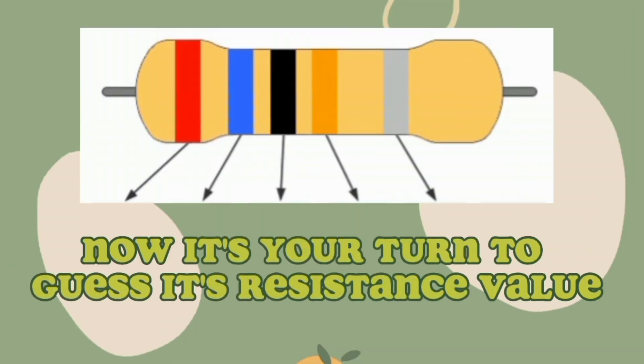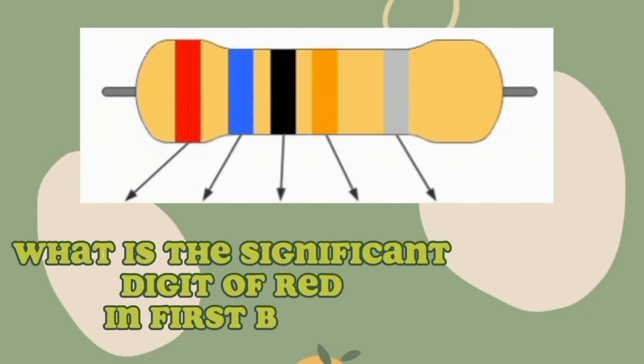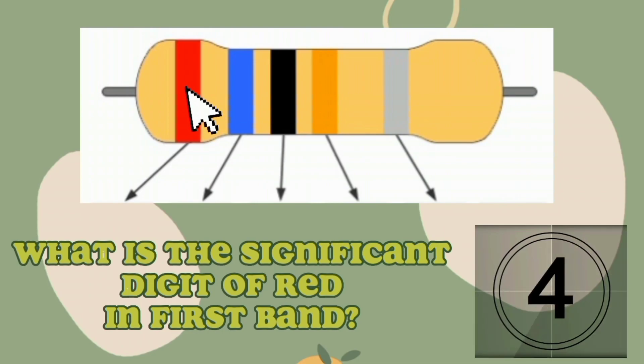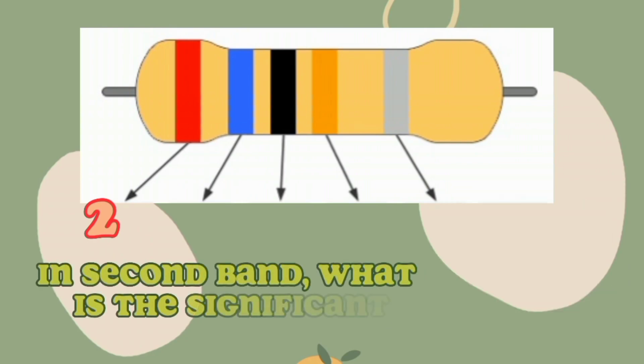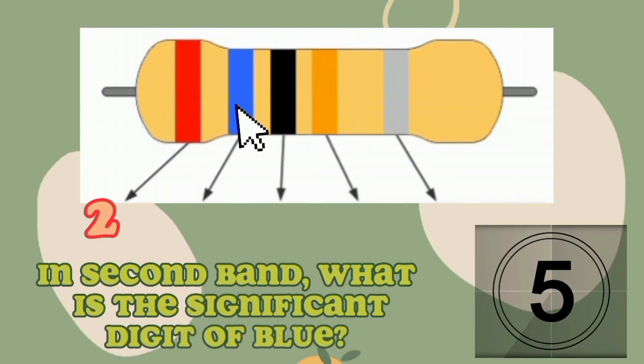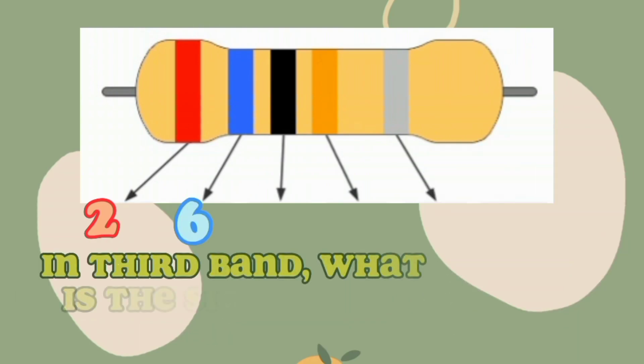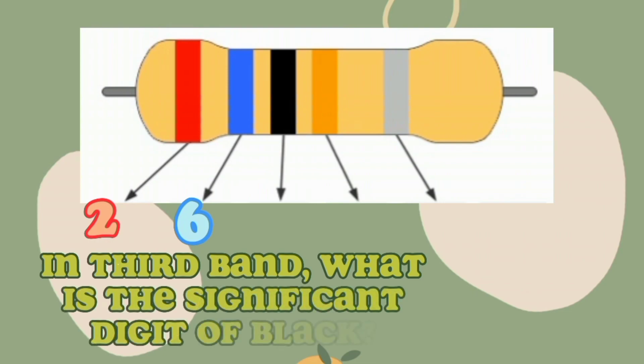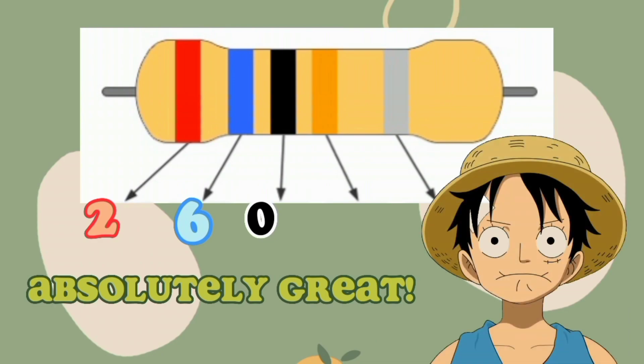Now let's have a test. Now it's your turn to guess its resistance value. What is the significant digit of red in the first band? You're correct. In the second band, what is the significant digit of blue? Excellent! In the third band, what is the significant digit of black? Absolutely great.